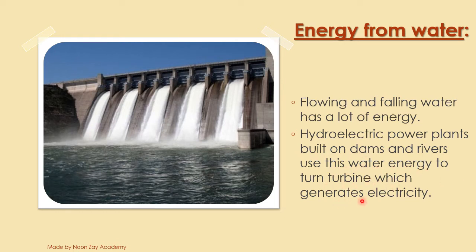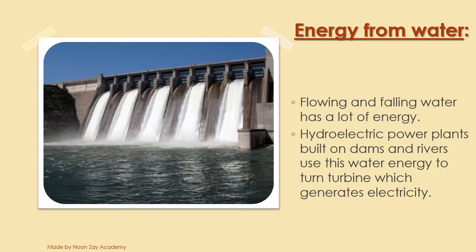Hydroelectric power plants built on dams and rivers use this water energy to turn a turbine which generates electricity. Hydroelectric mein 'hydro' stands for water aur 'electric' is for electricity. Yeh power plants dams aur rivers par banaye jaate hain. Pani ki height se woh turbines ko ghumata hai aur turbine ke ghumne se electricity generate hoti hai.